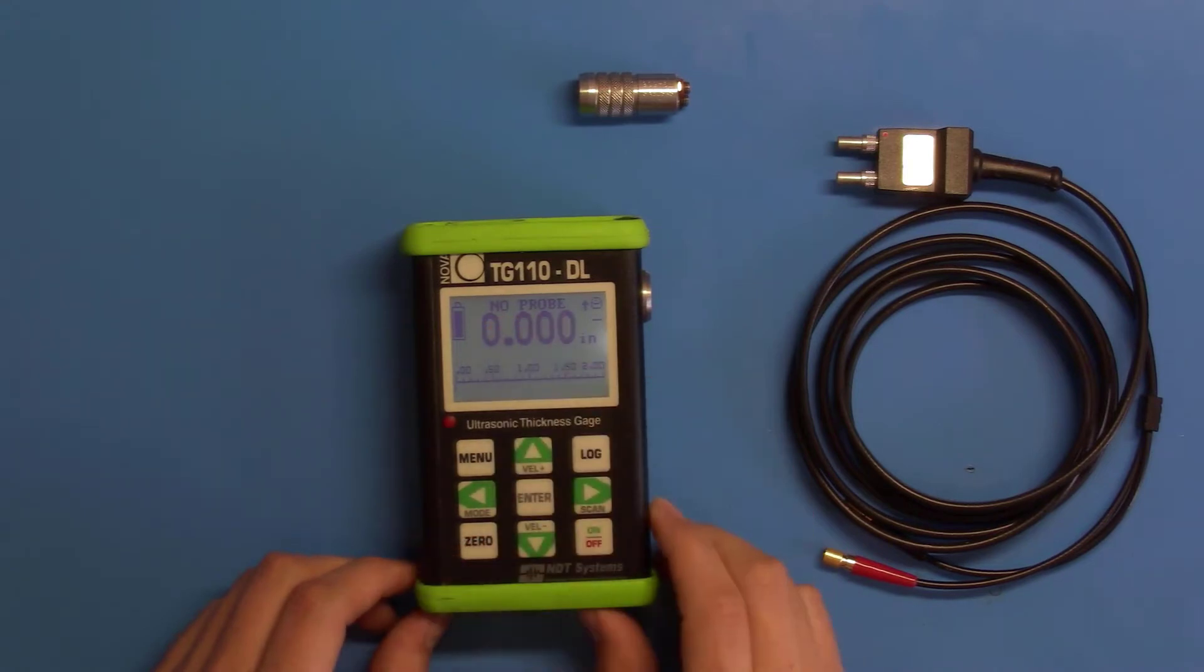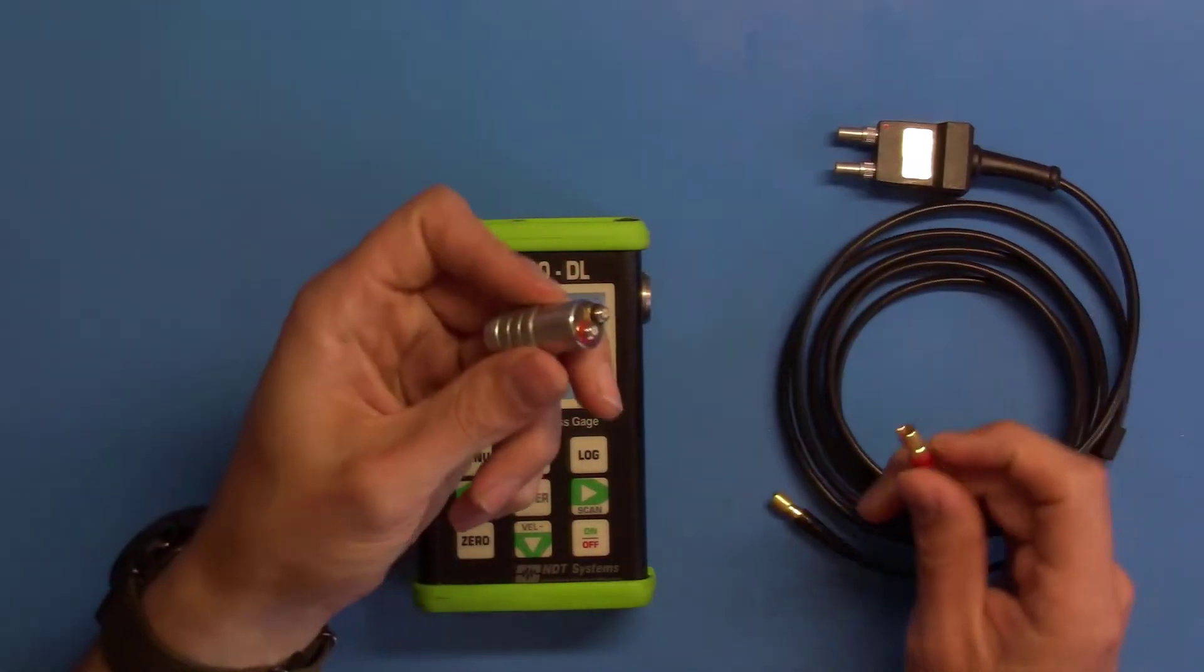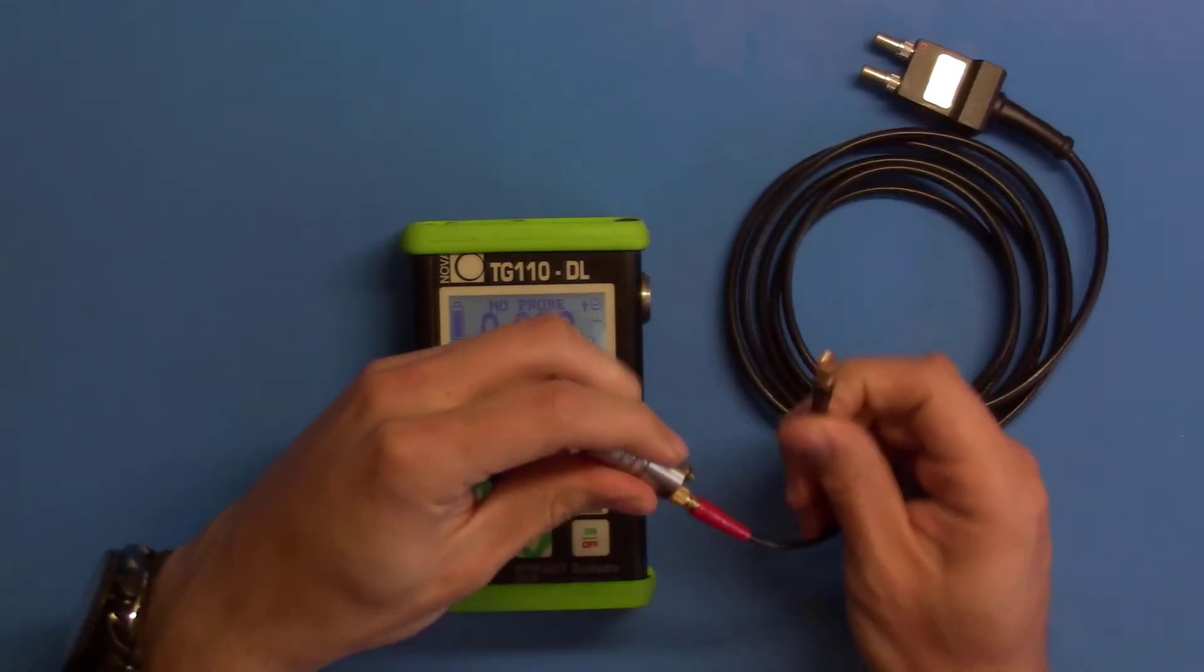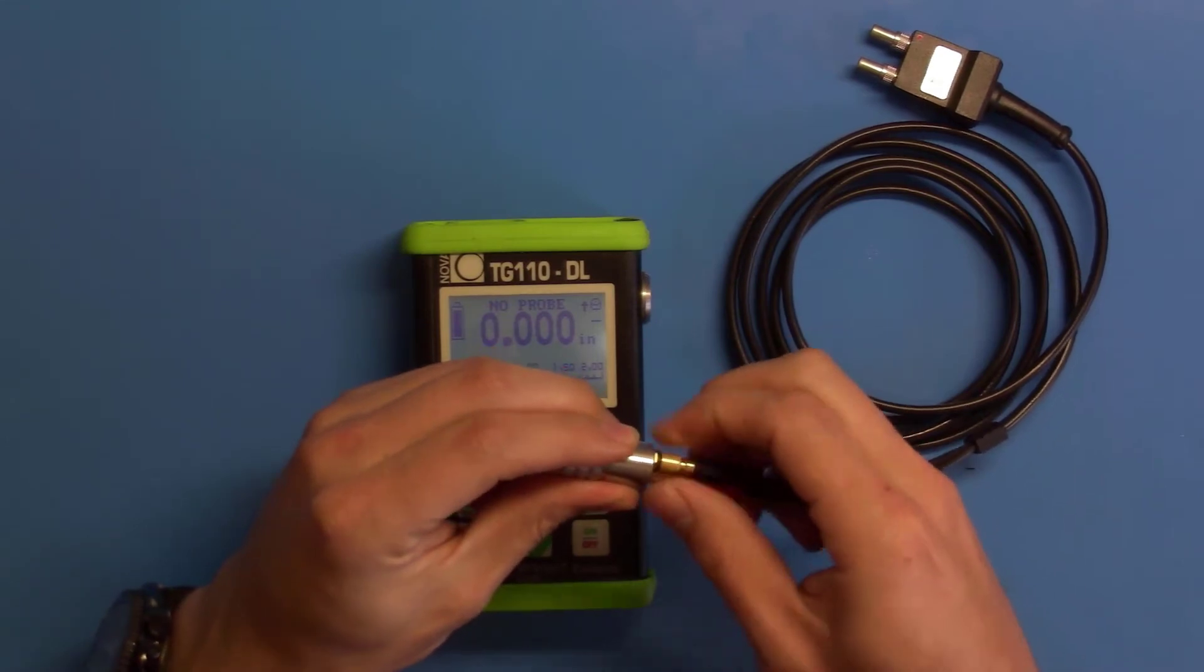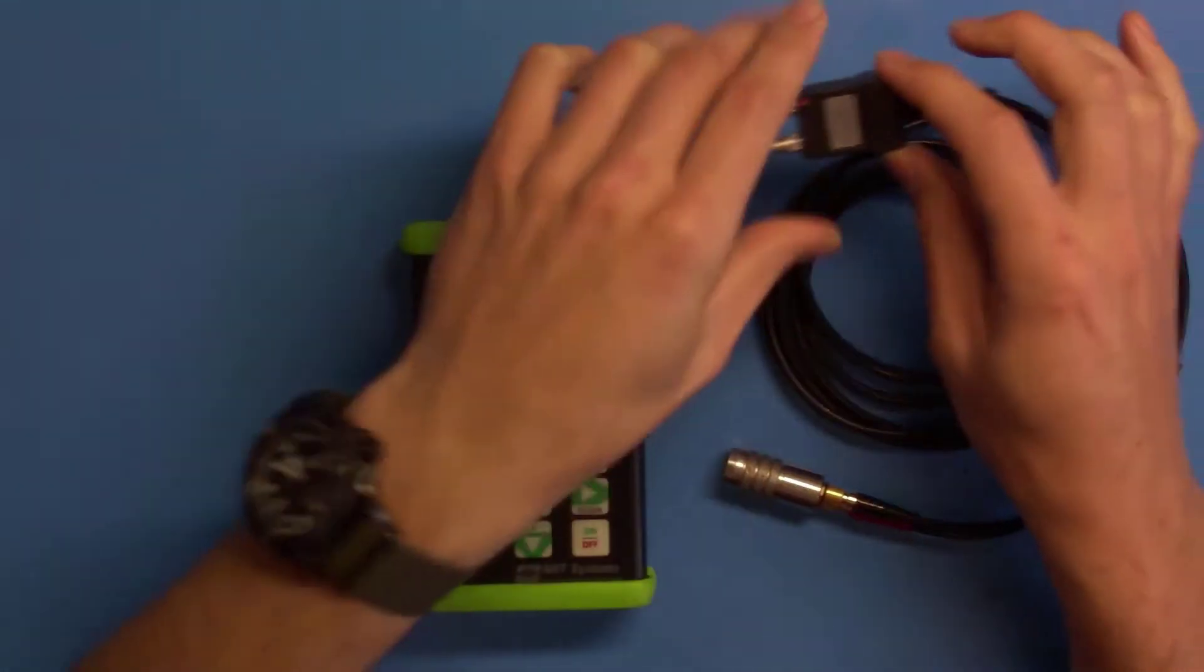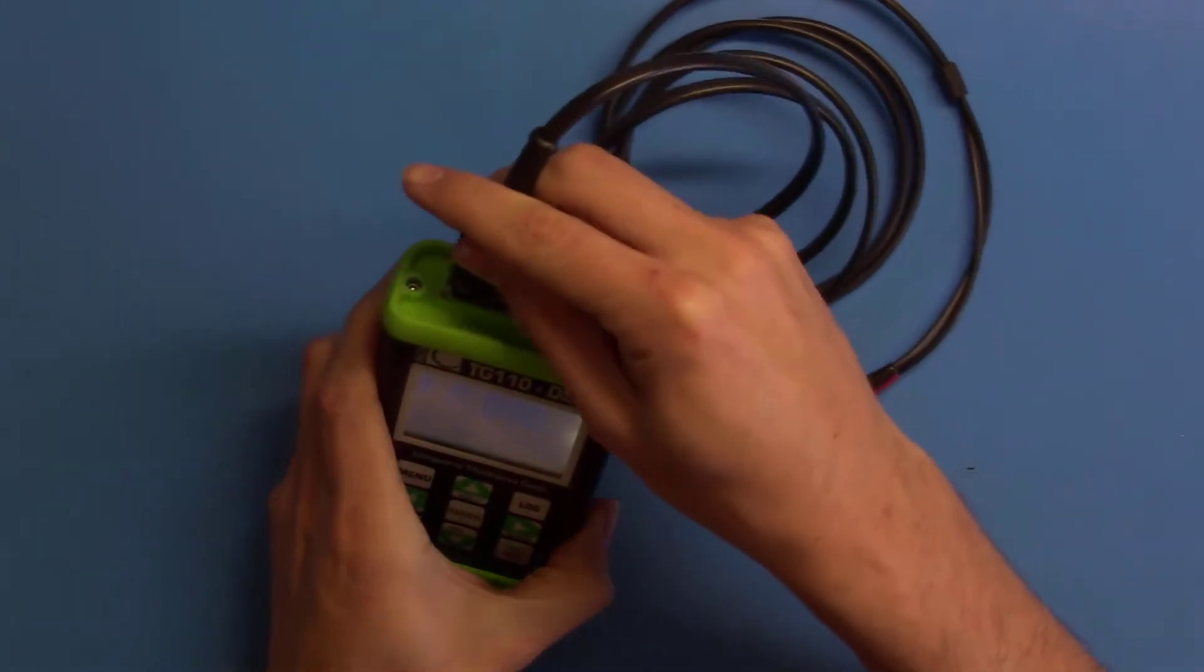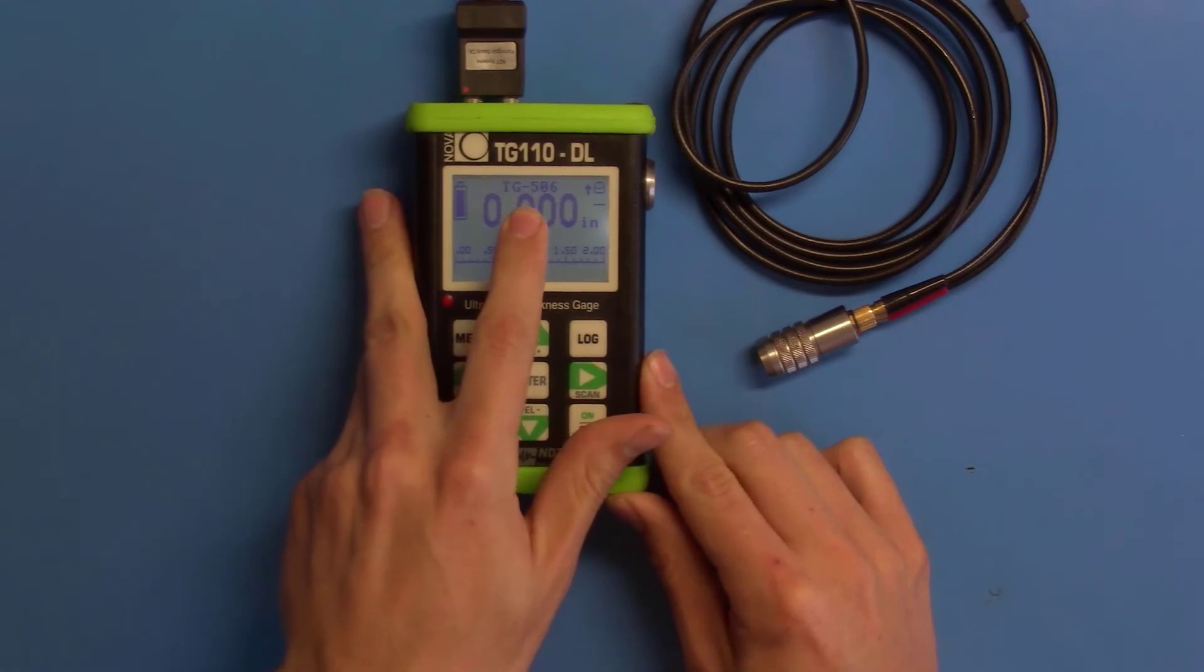Notice no probe is displayed on the top. Now let's connect our probe to the cable. Red lead to red connector. Black lead to black connector. Now let's connect the cable to the gauge. Make sure the red dot on the cable matches up with the red dot on the gauge. Notice now the probe profile is changed to TG506.